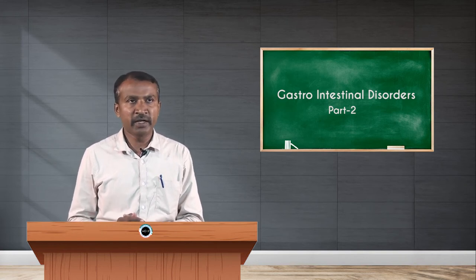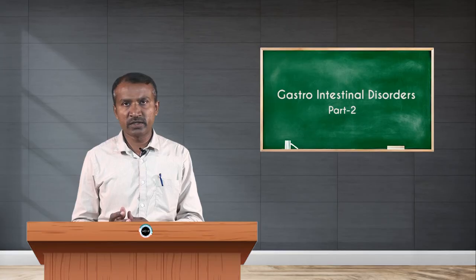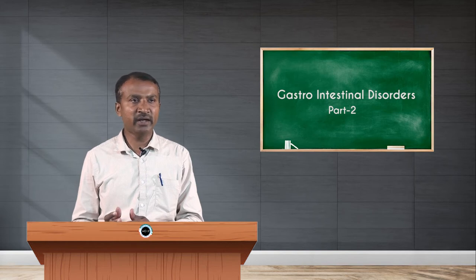Chronic gastritis is typically less severe but more persistent than acute gastritis. Nausea and upper abdominal discomfort may occur, sometimes with vomiting, but hematemesis is uncommon. The main causative agent for chronic gastritis is H. pylori (Helicobacter pylori).